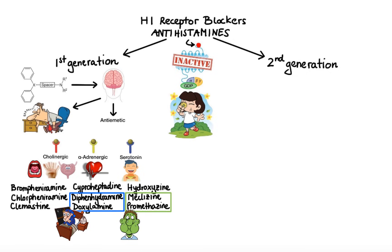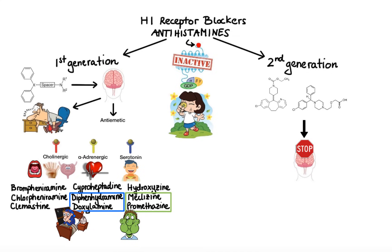Now let's move on to the second generation H1 antihistamines. Unlike the first generation, second generation agents have bulkier and less lipophilic structure. Therefore, they do not cross the blood-brain barrier as readily. Furthermore, they are much more selective for the peripheral H1 receptors involved in allergies, as opposed to H1 receptors in the central nervous system. As a result, second generation drugs provide the same allergy symptom relief but with fewer side effects such as sedation.